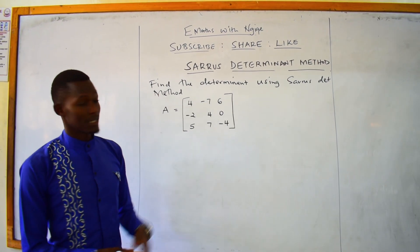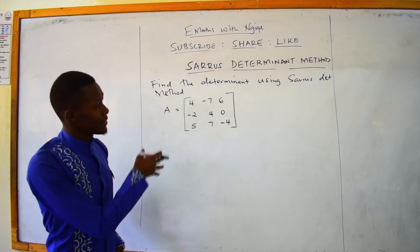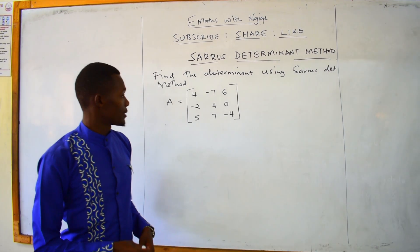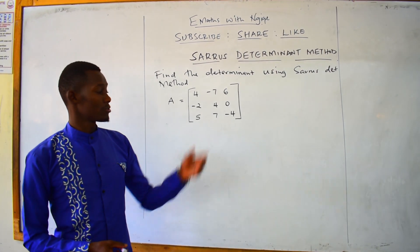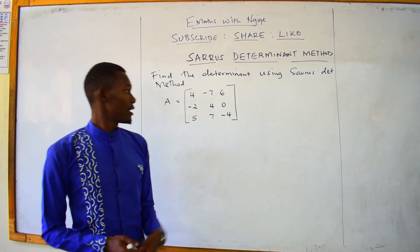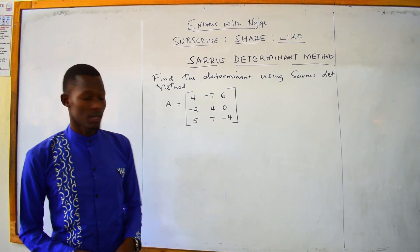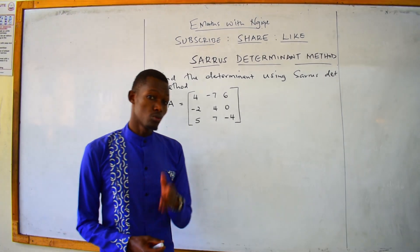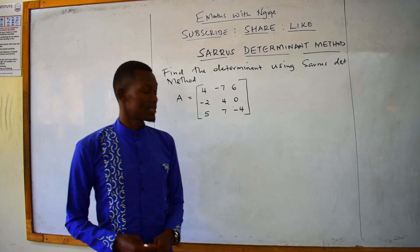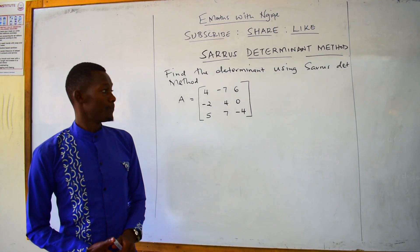Let's take an example. Find the determinant using the Sarrus method, given matrix A as: 4, negative 7, 6, negative 2, 4, 0, 5, 7, negative 4.